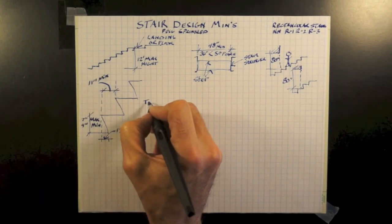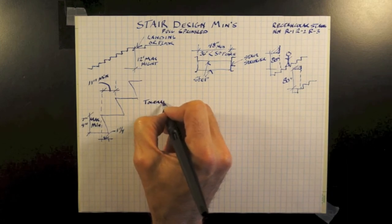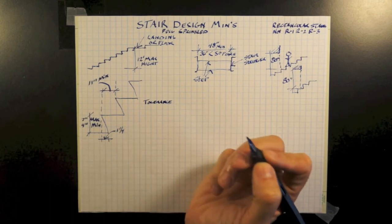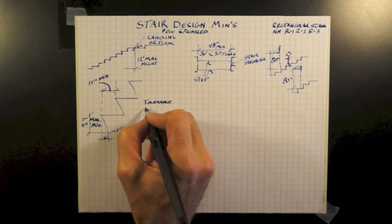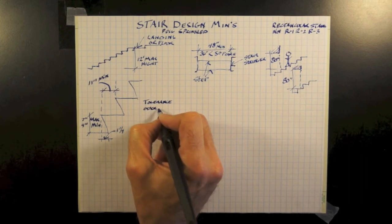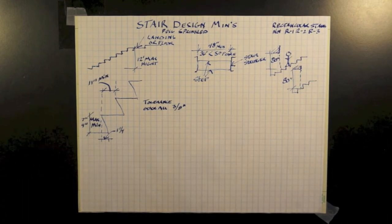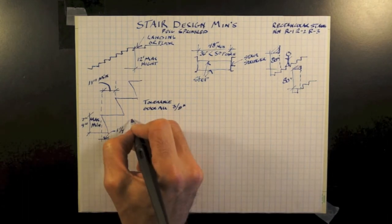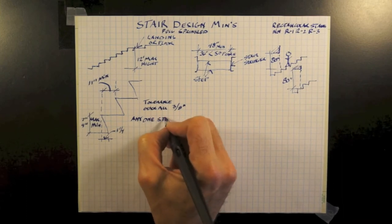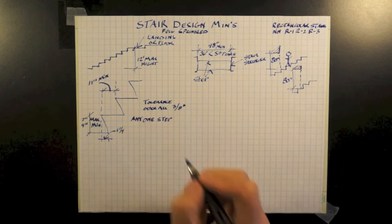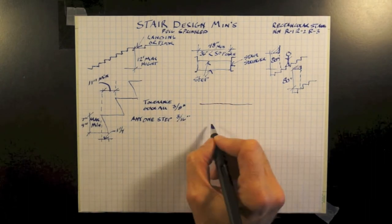It can be greater, but it cannot be less than 11. Now our construction or built tolerance. No step for the entire run of a stair, that means from one landing to the next landing, cannot have a dimensional difference of greater than 3/8 of an inch. And no step between one step and the next step can have a tolerance greater than 3/16 of an inch. That's in both height and the step itself, the tread.